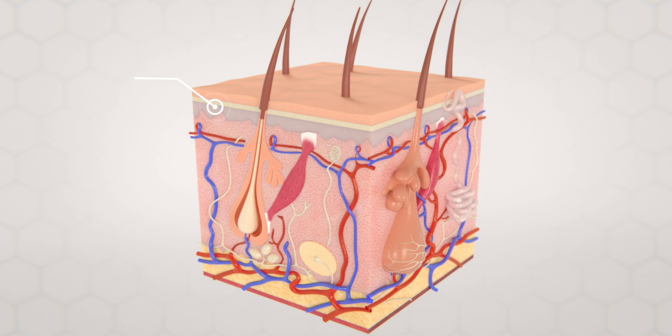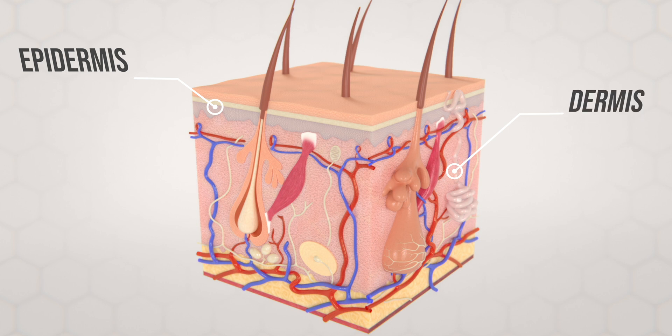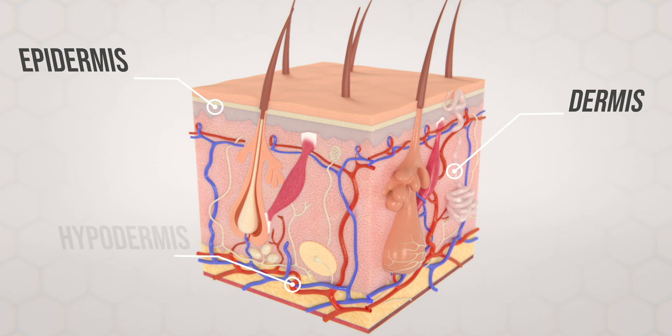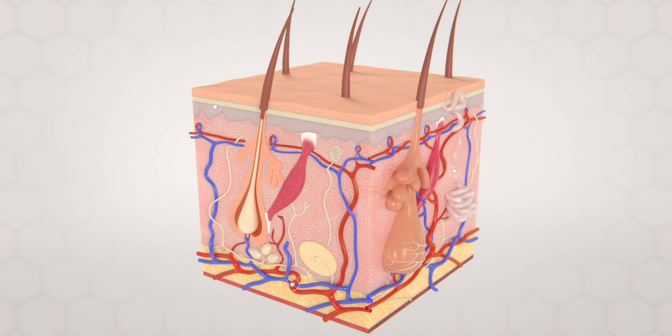Before we start classifying a burn, let's take a look at the different layers of our skin because that's going to directly relate to how we classify the severity of a burn. Our skin has three main layers: the epidermis, which means above the dermis; the dermis, which is the thickest main part of the skin underneath; and underneath the dermis, we have the hypodermis — hypo means low — also called the subcutaneous tissue.